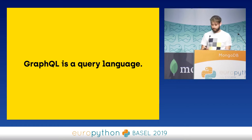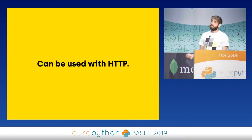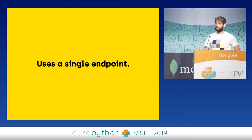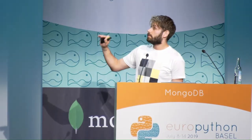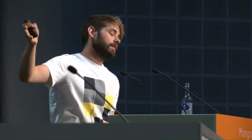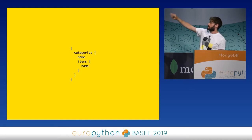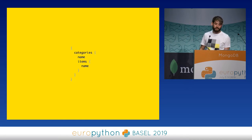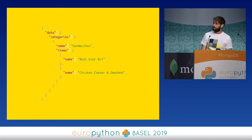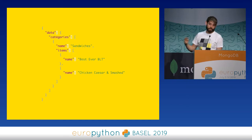GraphQL can be used with HTTP — it doesn't have to be, you can use it with WebSocket or any other protocol. In the case of HTTP, there is only one endpoint, and you send a document to request the data you want. You do something like HTTP POST /graphql and send your query, and you get back exactly the data you asked for. If you want to ask for more information, you just change the shape of your document and the response matches what you requested.